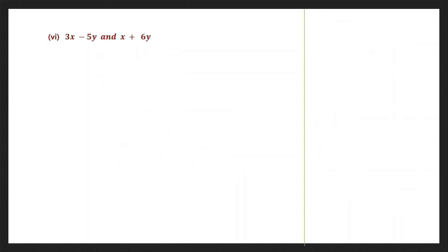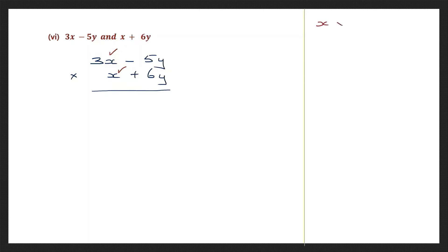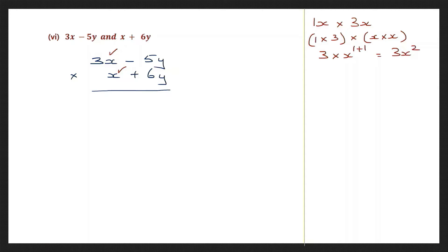Question 6: 3x minus 5y into x plus 6y. Let's multiply x into 3x: the numbers are 1 into 3 and x into x, which is 3 into x to the power of 1 plus 1, giving 3x squared. Let's write it down: 3x squared.